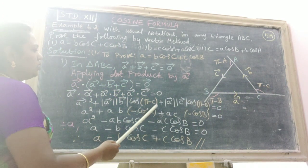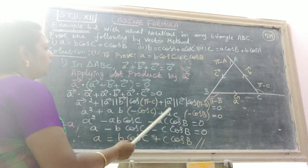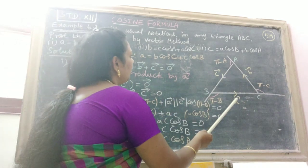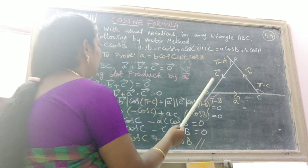Plus modulus A times modulus C, where the angle between A and C is π minus B. Therefore substitute here.